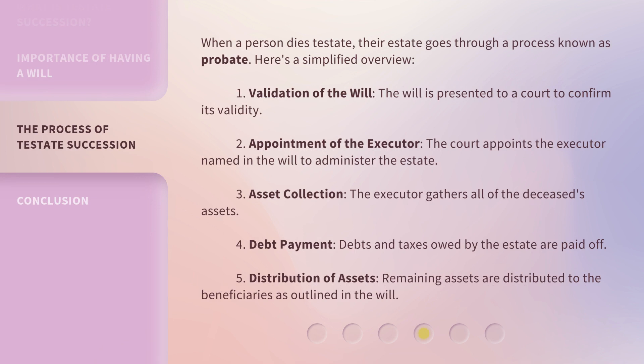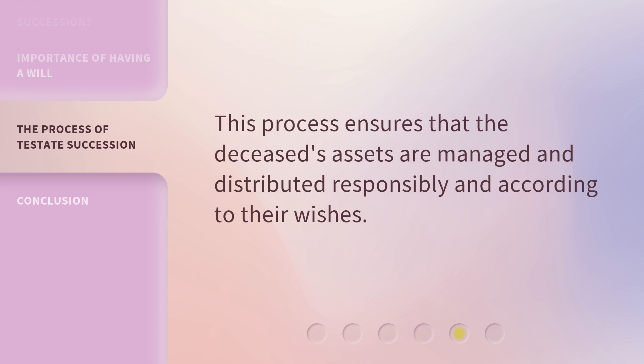When a person dies testate, their estate goes through a process known as probate. Here's a simplified overview. 1. Validation of the will — the will is presented to a court to confirm its validity. 2. Appointment of the executor — the court appoints the executor named in the will to administer the estate. 3. Asset collection — the executor gathers all of the deceased's assets. 4. Debt payment — debts and taxes owed by the estate are paid off. 5. Distribution of assets — remaining assets are distributed to the beneficiaries as outlined in the will. This process ensures that the deceased's assets are managed and distributed responsibly and according to their wishes.